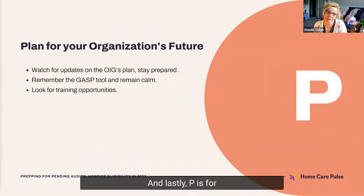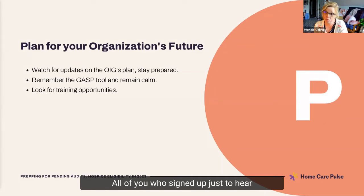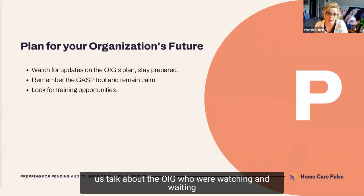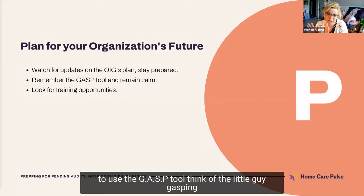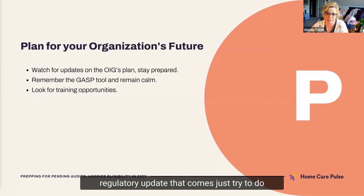And lastly, P is for plan for your organization's future. All of you who signed up just to hear us talk about the OIG and were watching and waiting to use the GASP tool — think of the little guy gasping. More importantly, look for opportunities to keep training your staff so everyone can be prepared. This is not going to be the only regulatory update that comes, so just try to do everything you can to stay on top of it.